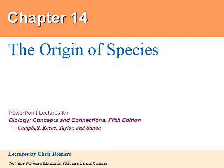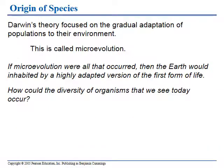Chapter 14: The Origin of Species. Darwin's theory of evolution mostly looked at something called microevolution, which are small changes in a particular species that help them adapt to their environment.